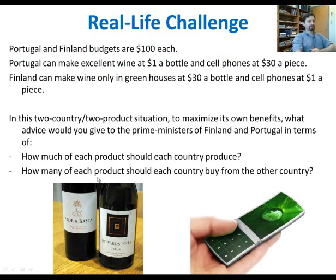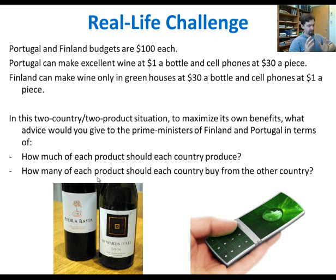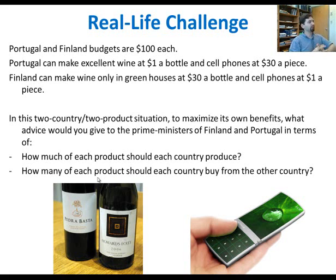Here is another real-life exchange example. Assume there are only two countries — Portugal and Finland — each with a budget of $100, capable of producing goods worth $100. Portugal can make excellent wine at $1 per bottle, but cell phones cost Portugal $30 a piece. Finland has a colder climate, so wine costs $30 per bottle there, but Finland can make cell phones at just $1 a piece.